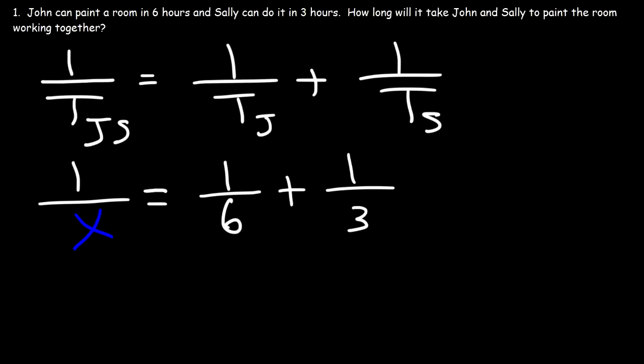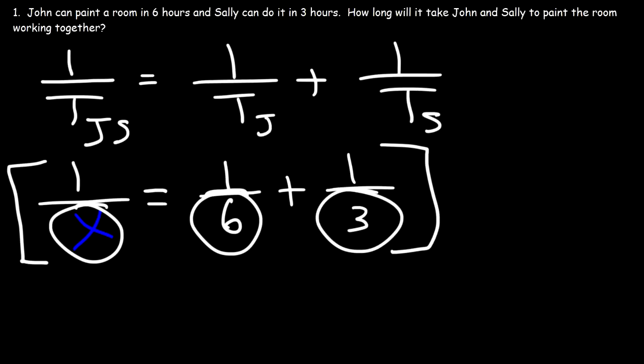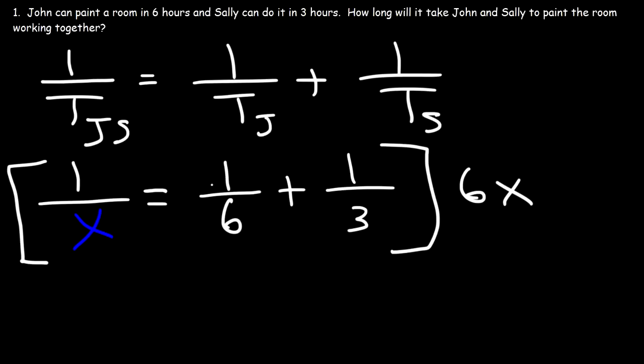For those who prefer to use a calculator, I'll show that method as well. For those who want to show their work, you need to multiply both sides — every fraction in this equation — by something that will eliminate all the denominators. We need to find the least common multiple of X, 6, and 3, which is 6X.